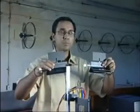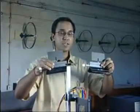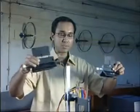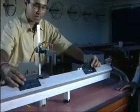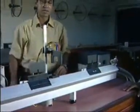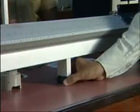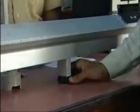These are the two objects between which we will study the collision. We place it on this air track and as you can see they are floating on the air track. The air track can be leveled using these screws as shown here by my colleague.